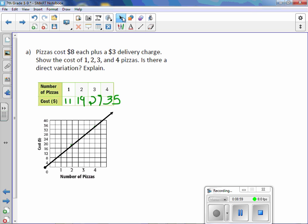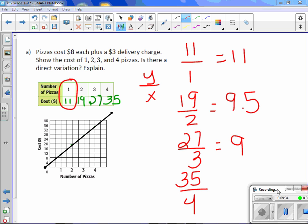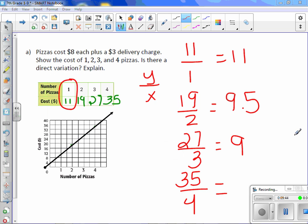And we can do that by figuring out our y values divided by our x for each one. So for one pizza and $11, 11 divided by 1 is $11. $19 for two pizzas, 19 divided by 2 is $9.5. 27 divided by 3 pizzas is $9 exactly. And 35 divided by 4 pizzas, let's use a quick calculation. 35 divided by 4 looks like $8.75.